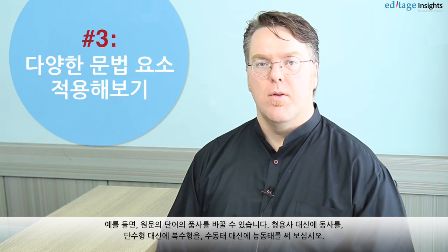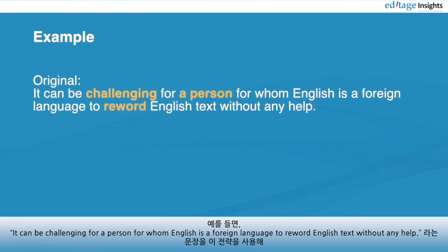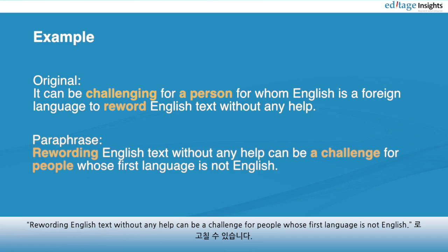Point number three, you can use different grammar. For example, you could change some of the words in the original sentence into different parts of speech — say, if you use a verb form instead of an adjective, or a plural construction instead of singular, or an active voice in place of the passive. Then the entire construction of the sentence will change. For example, taking: 'It can be challenging for a person for whom English is a foreign language to reword English text without any help.' By following these examples, the new paraphrase becomes: 'Rewording English text without any help can be a challenge for people whose first language is not English.'